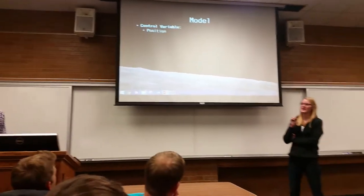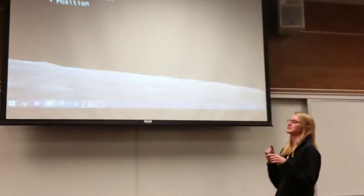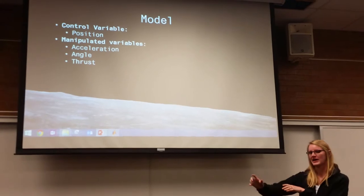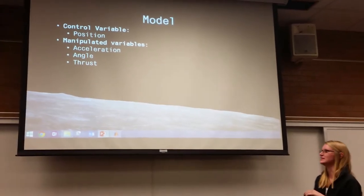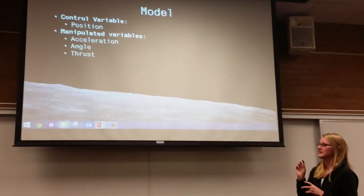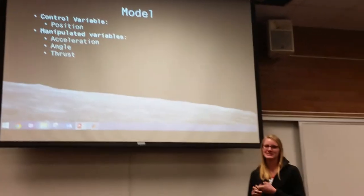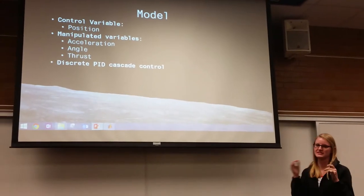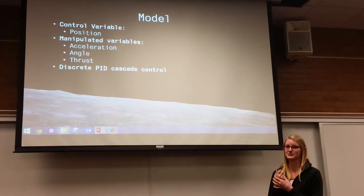For our model, we had our control variables in the position of the lunar lander, and we wanted to get to the landing pad that would randomly generate every time we created a new game. So we had two different variables: their acceleration, angle, and thrust. And to use all these together, we created a discrete PID control.